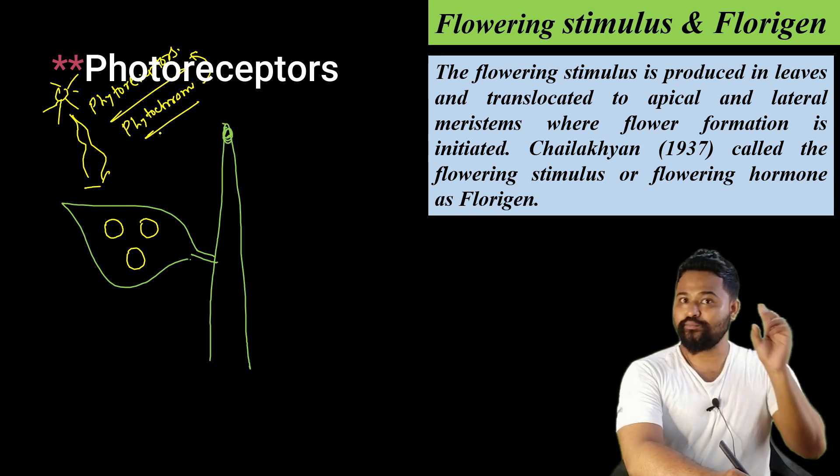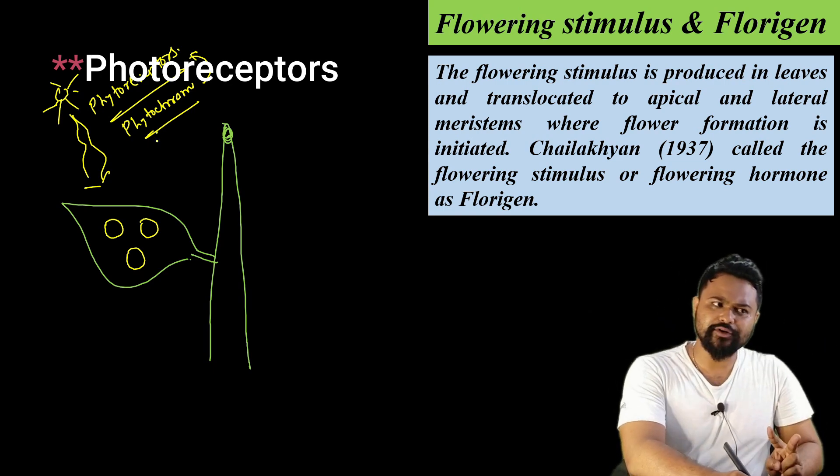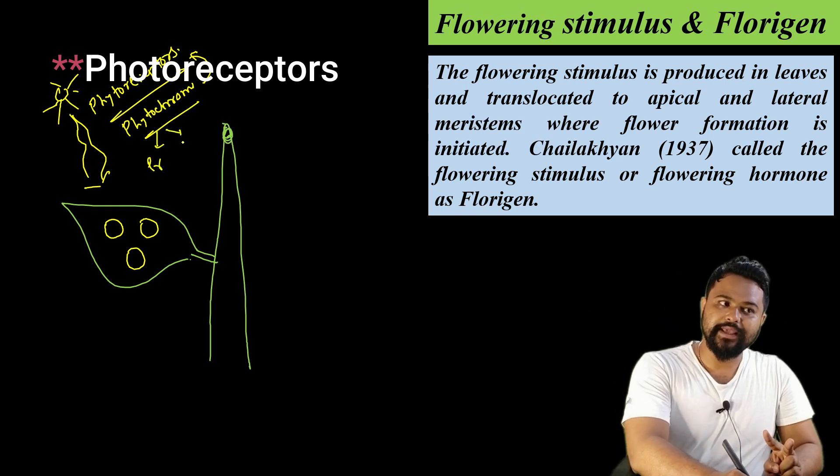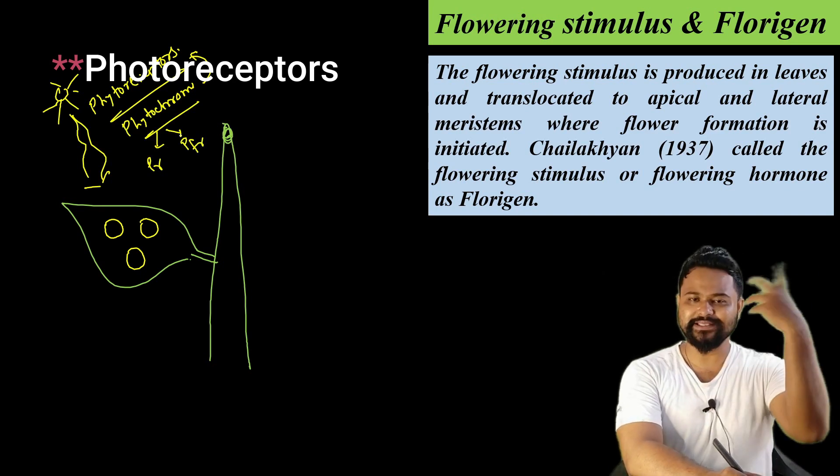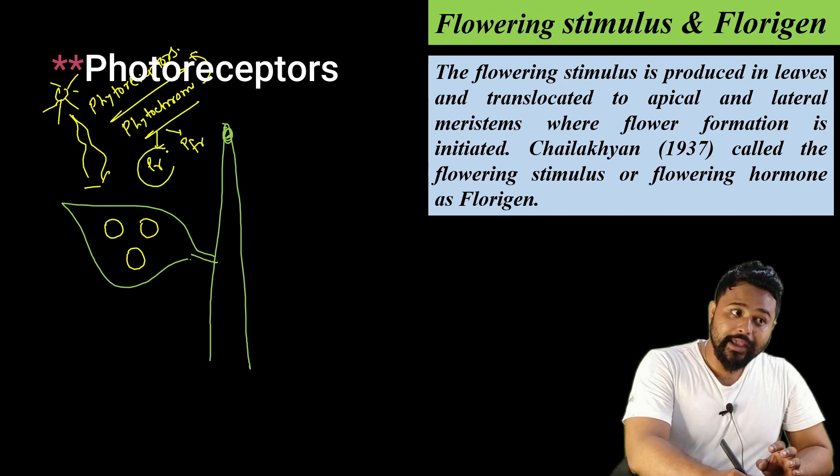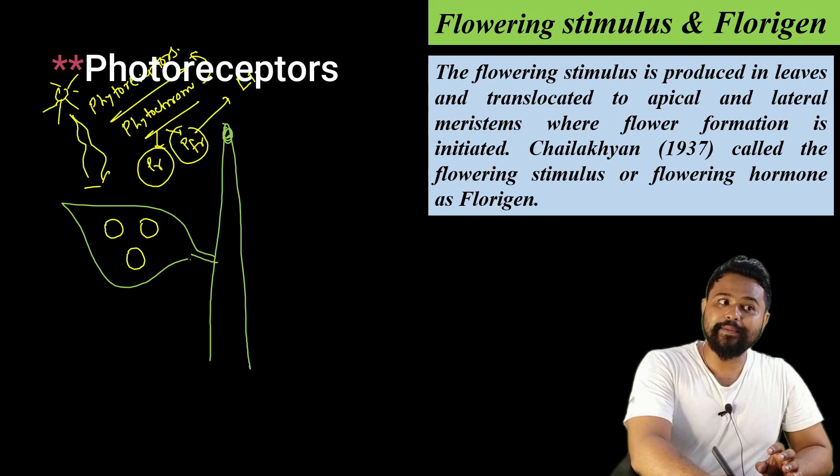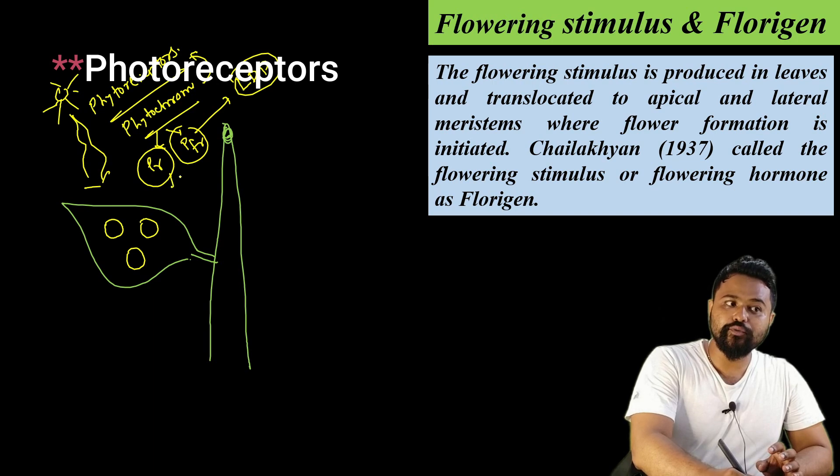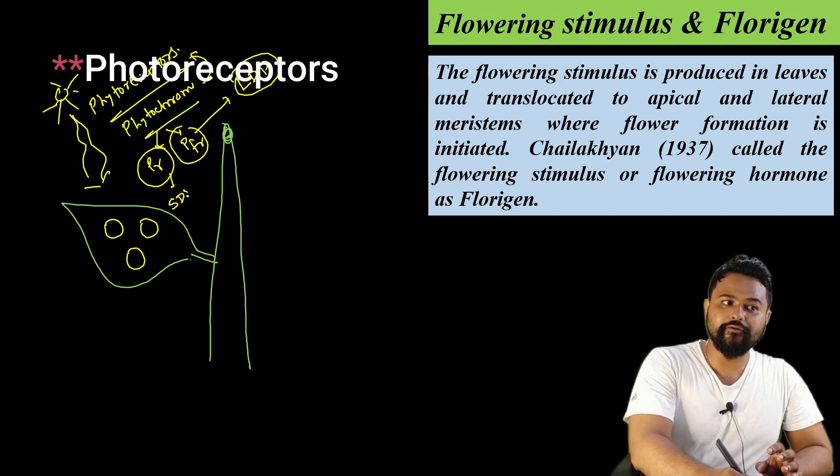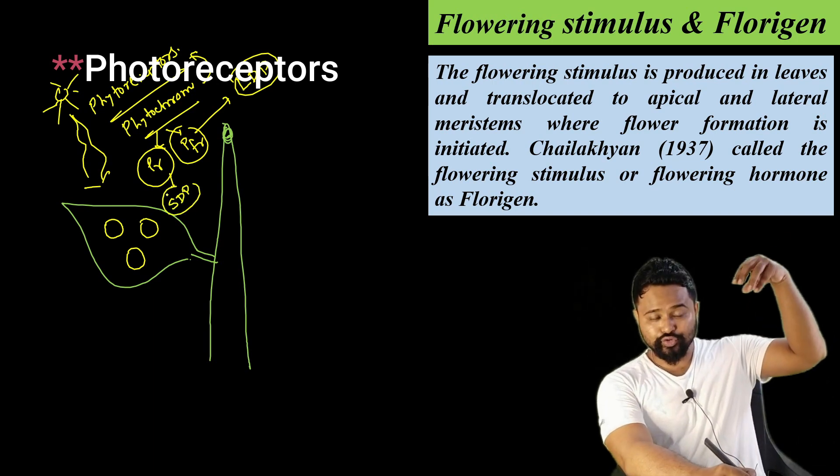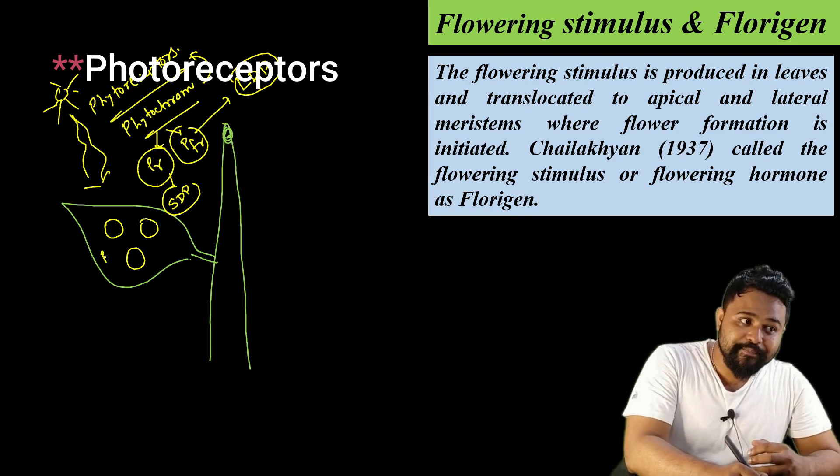This phytochrome is called PR and PFR. In the last class we discussed, please follow the last video. The PFR form is very important for long day plant flowering, and the PR form is very important for short day plant flowering.